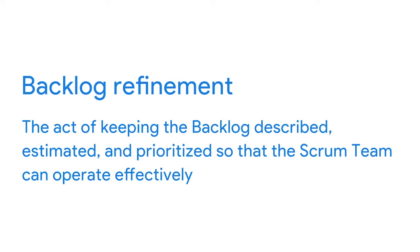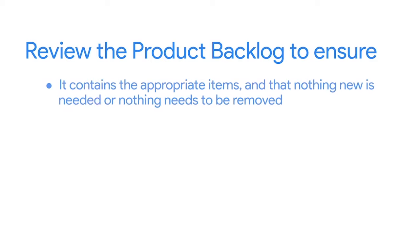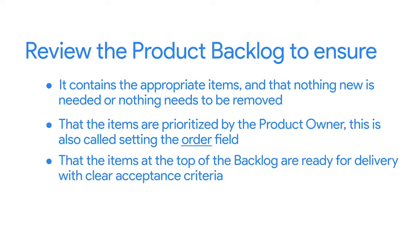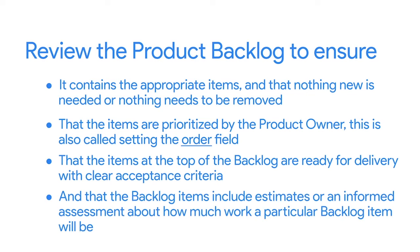We've been exploring everything about the product backlog. Although the product owner owns the data in the backlog, the team must work together to keep this living document up to date through a process called backlog refinement. Backlog refinement refers to the act of keeping the backlog described, estimated, and prioritized so the Scrum team can operate effectively. It involves the product owner and some or all of the Scrum team reviewing the backlog to ensure it contains appropriate items, nothing new is needed, items are prioritized, top items are ready for delivery with clear acceptance criteria, and backlog items include estimates.